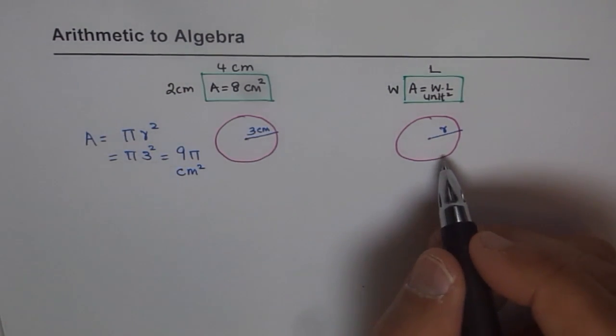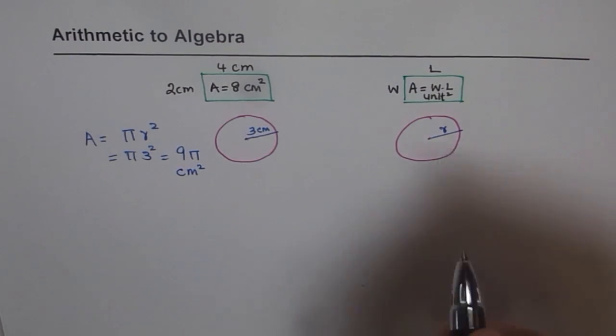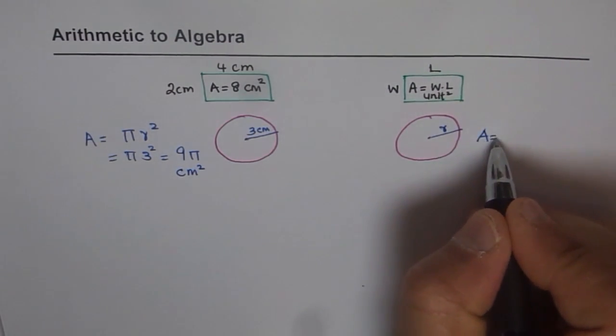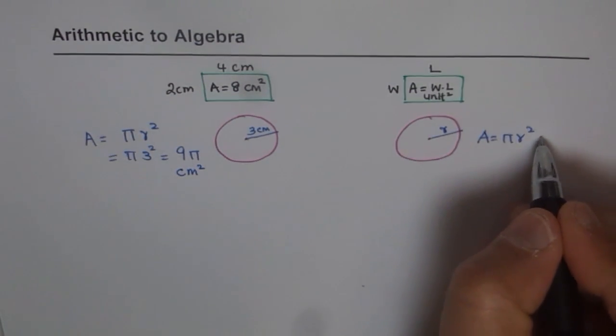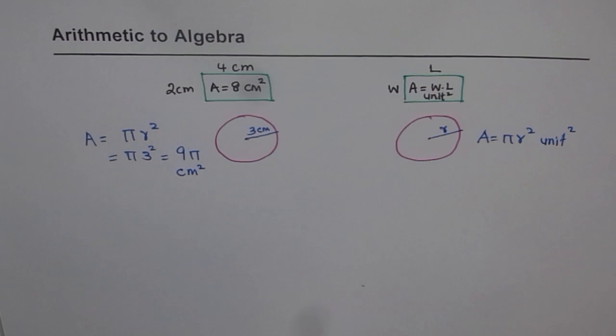Now this circle, what is the area of this? I can only say the area is pi R square. I don't know what this is, so I will just say unit square. I write very generally, this is my circle with area of pi R square.